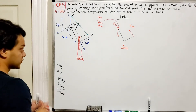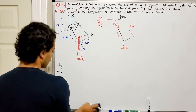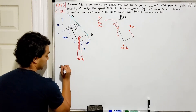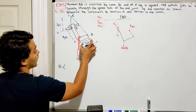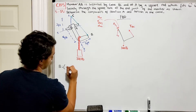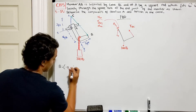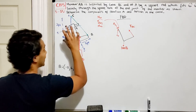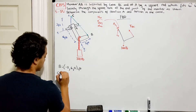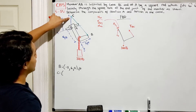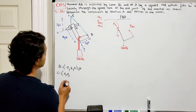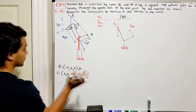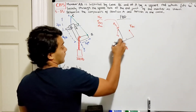Now we're going to define where A, B, and C are located. A is at the origin — zero, zero, zero. B is located at negative 3 in the x-direction, positive 6 in the y-direction, and 0 in z, in feet. Point C is at zero in x, zero in y, but has an altitude of 2 feet.